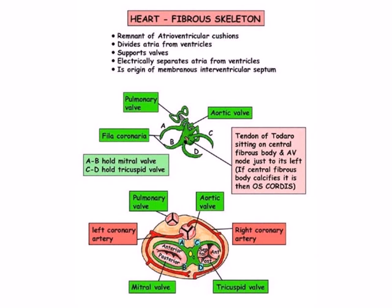The actual muscle of the four chambers and the four valves are all attached to and supported by a figure-of-8 shaped fibrous skeleton. This consists of a central fibrous body with extensions called fila coronia that surround the valves. This skeleton electrically separates the atria from the ventricles and is a remnant of the atrioventricular cushions formed during fetal development. Extending downwards from it is the thinner membranous part of the interventricular septum.